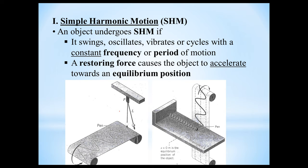One other thing I want to point out is the type of graph shape you can form from an object that undergoes simple harmonic motion. In the case of the pendulum, there's a little pen attached to the end of the pendulum bob. As it goes back and forth, it makes contact with a roll of paper. If this roll of paper was stationary, all I would see is the pen making a mark that goes back and forth — it would just be a single line.